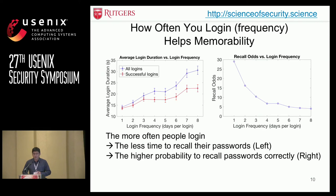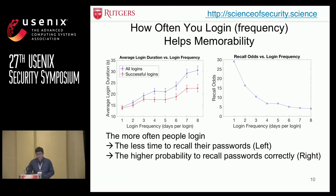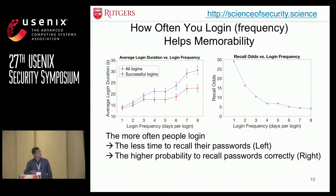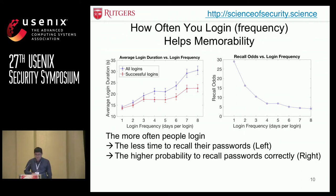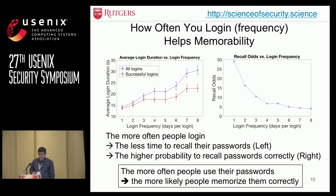Besides the fitted models, we also analyzed the relationship between login frequency and password memorability. We found that the more people log in, the less time they need to recall their passwords. All logins include failed logins, because there is a time limit, and successful logins of course are straightforward. The right figure shows that the more often people log in, the higher the probability of correctly recalling their password. Both results make sense because the more people use passwords, the more likely they will memorize them correctly.